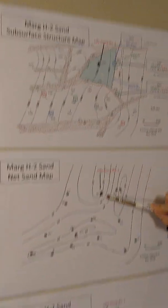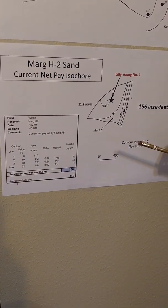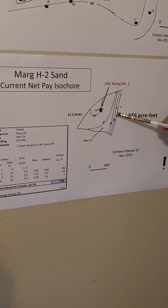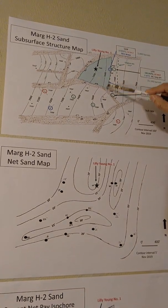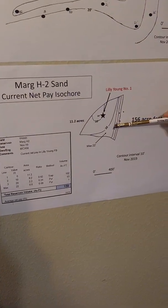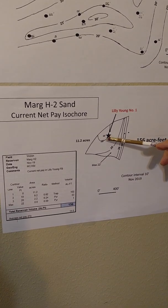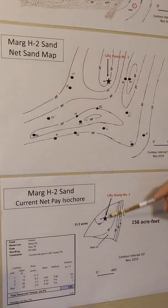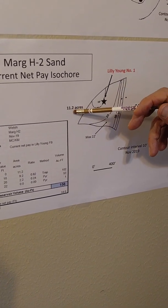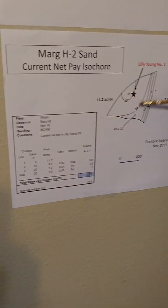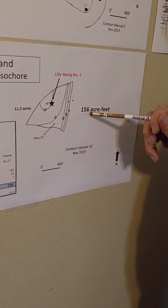We take this map and this map and combine them to come up with the current net pay isochore map — this is a thickness map. The zero line right here — these are the thickness lines — the zero line is always equal to the oil-water contact, the current oil-water contact. And then the 10-foot thick and the 20-foot thick as you move up there, there's a wedge. But you also have to honor the 10-foot thickness from this map here. So this is the current net pay isochore map — it's about 11.2 acres. And as we perimeter all these areas, we put it in the formula and we get 156 acre-feet. So that's the reservoir volume.